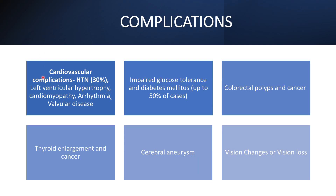If left untreated, acromegaly can cause major health problems leading to premature death. Cardiovascular complications are among the most common — hypertension occurs in 30% of cases, along with left ventricular hypertrophy, cardiomyopathy, arrhythmias, and valvular disease. Impaired glucose tolerance and diabetes mellitus occur in up to 50% of cases. It also increases the risk of colorectal polyps and cancer, thyroid enlargement and cancer, cerebral aneurysm, and vision changes or vision loss.